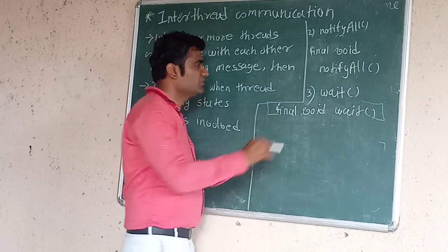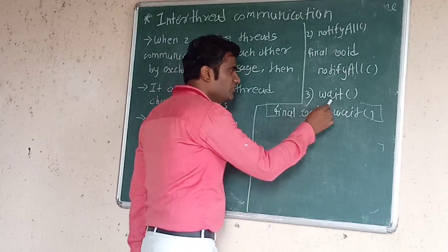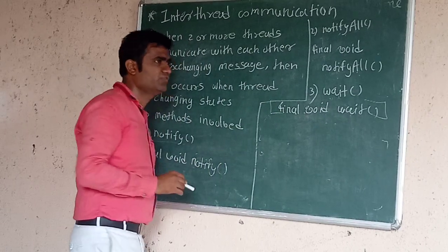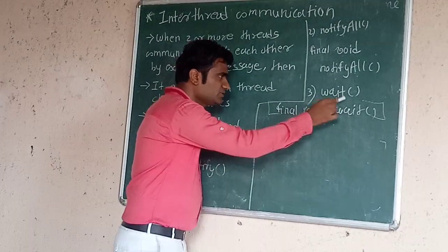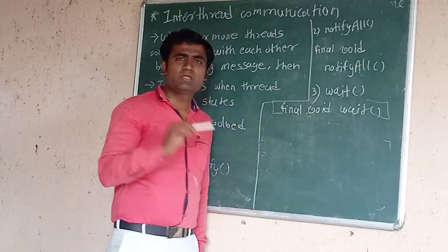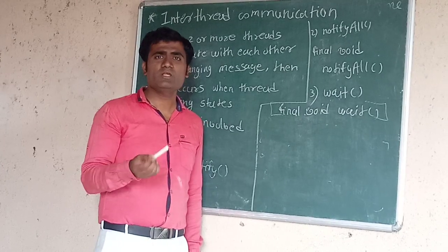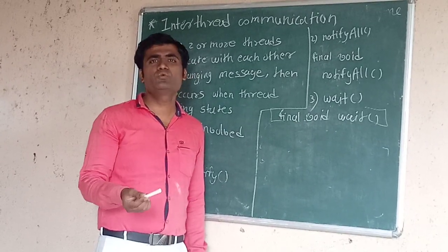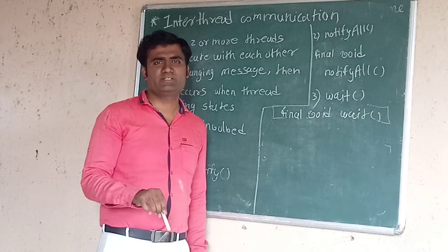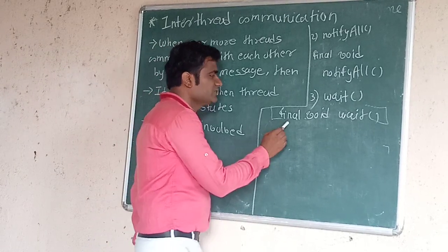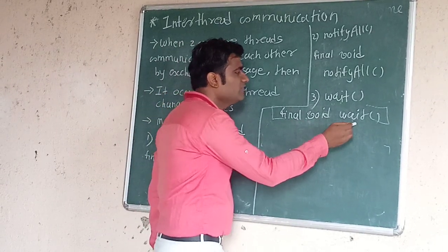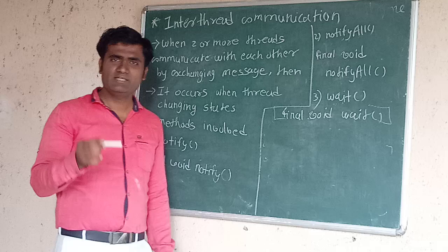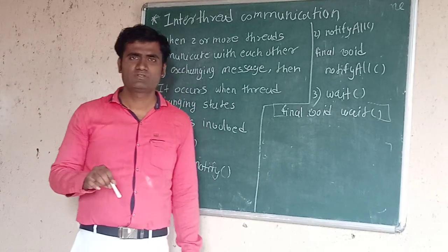The third method is wait(). Its operation is opposite to notify. When wait() is called, it informs the active thread to switch into the blocked state. Its syntax is final void wait(). This method also belongs to the Object class, inherited in the thread class.